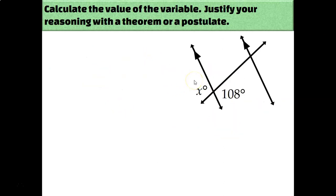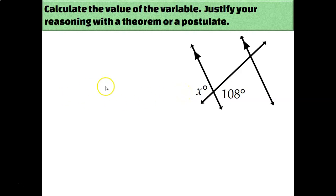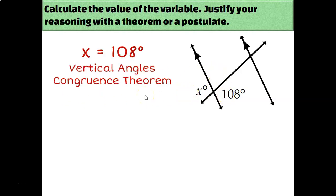Next, we have an example that doesn't even involve parallel lines, because the other line isn't used to create either of these two angles. That's because they're just vertical angles — we already knew how to calculate these even before we started this unit. Vertical angles are congruent, so if this angle measures 108, then x measures 108 as well.